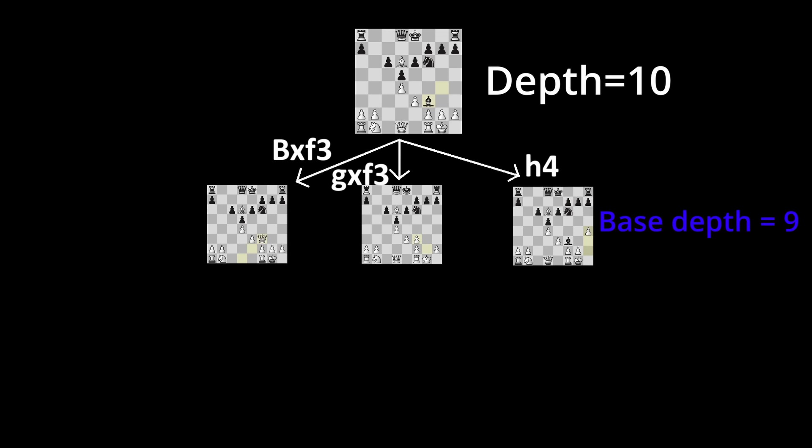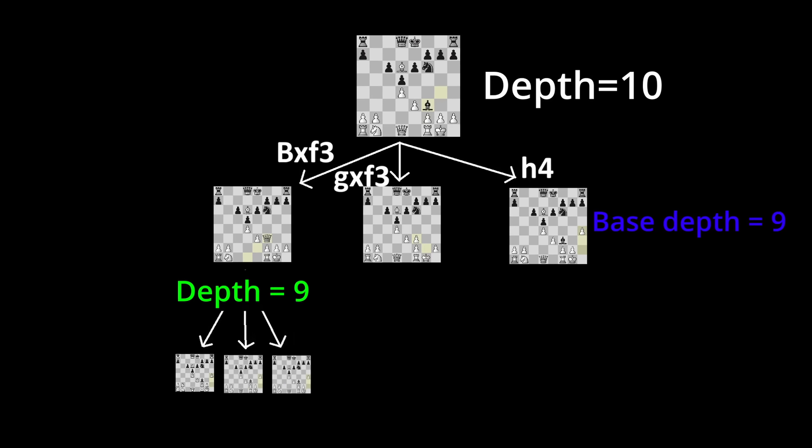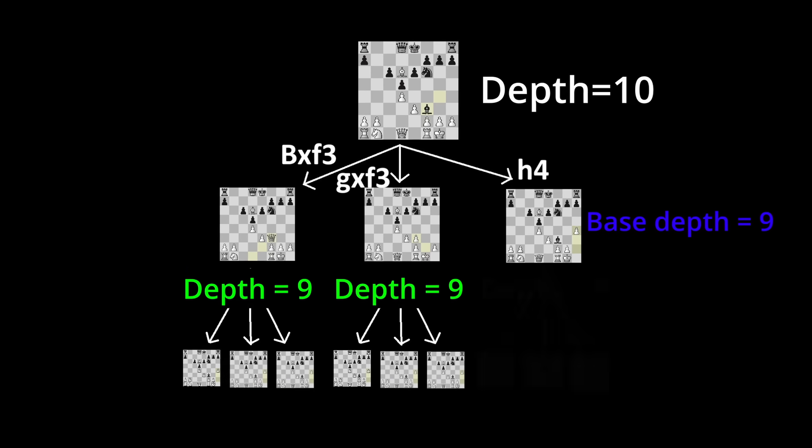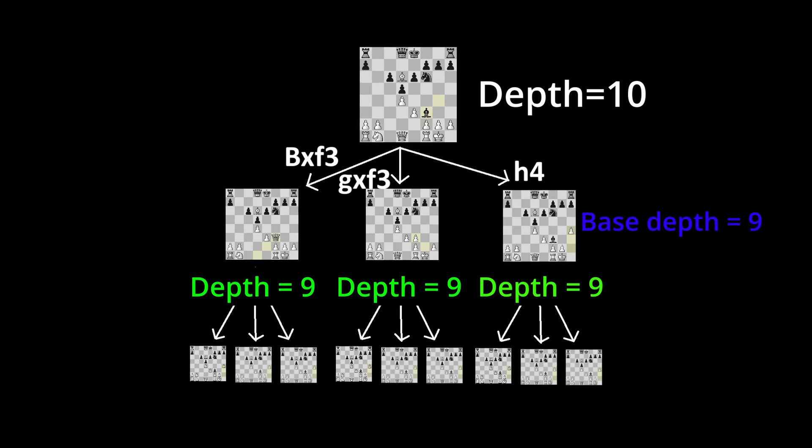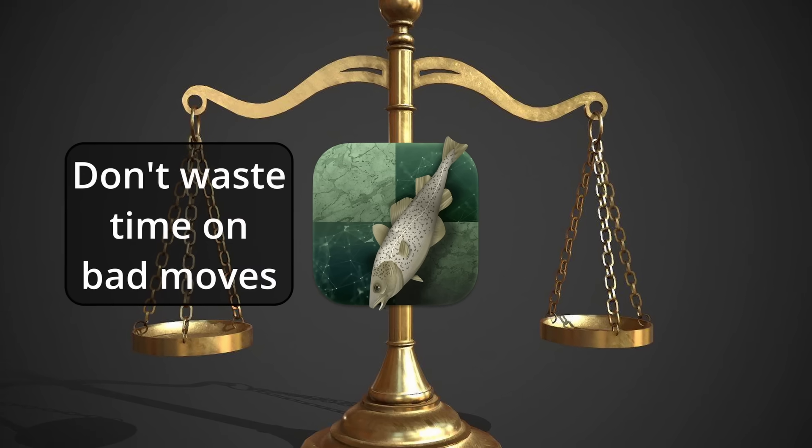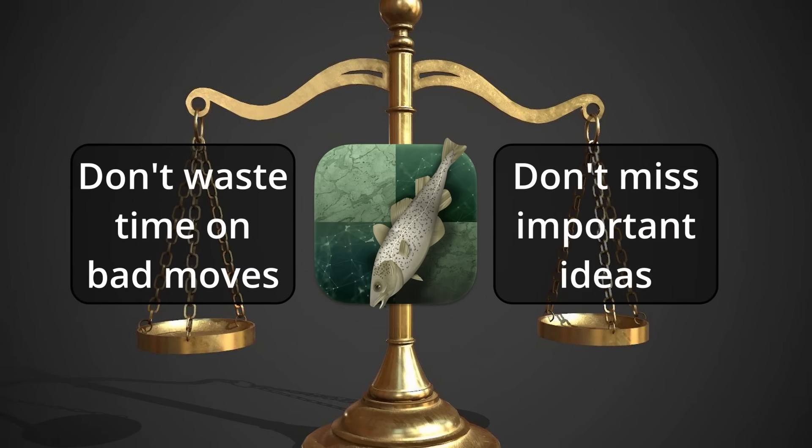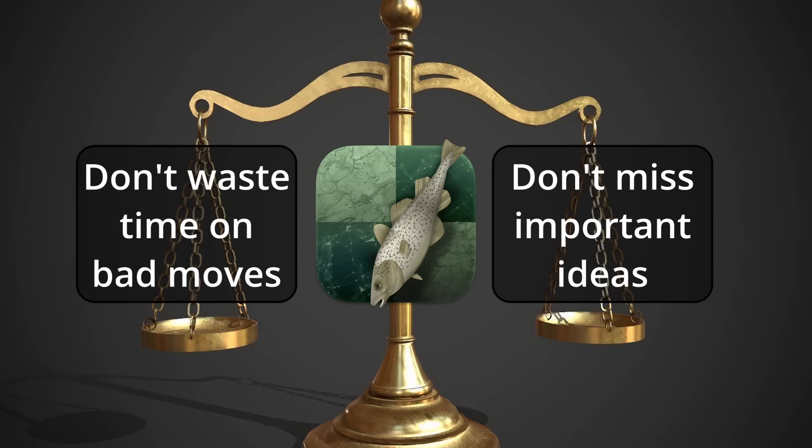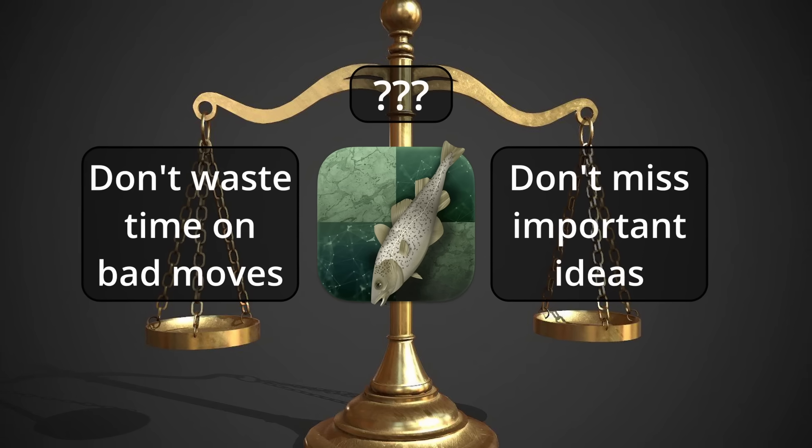But with the plain Minimax algorithm, Stockfish spends the same amount of time on each move, no matter how bad it is. On the one hand, you don't want to waste time on bad moves, but on the other hand, you want to look at every move so you don't miss something important. So how does Stockfish solve this dilemma?